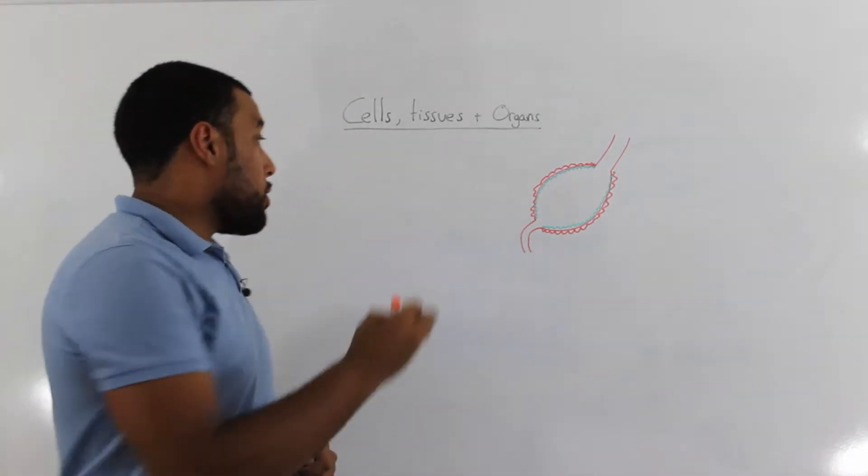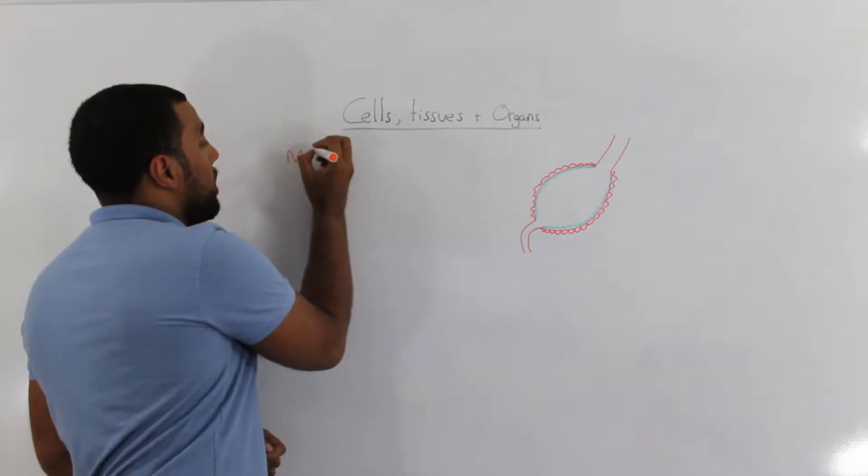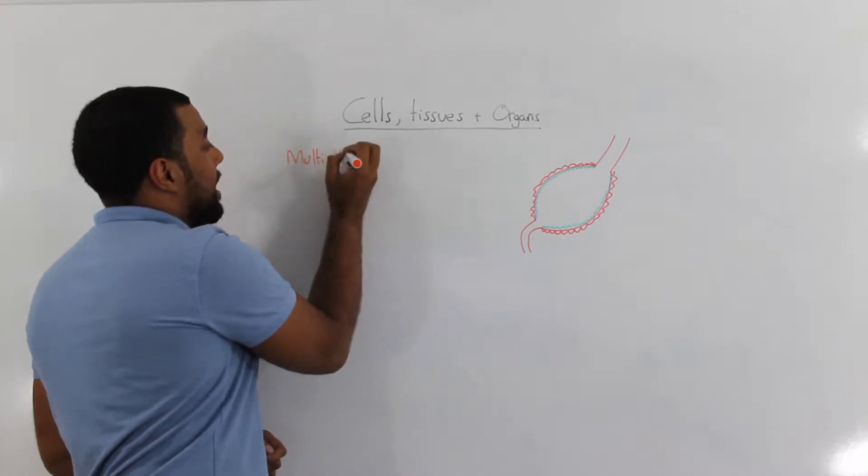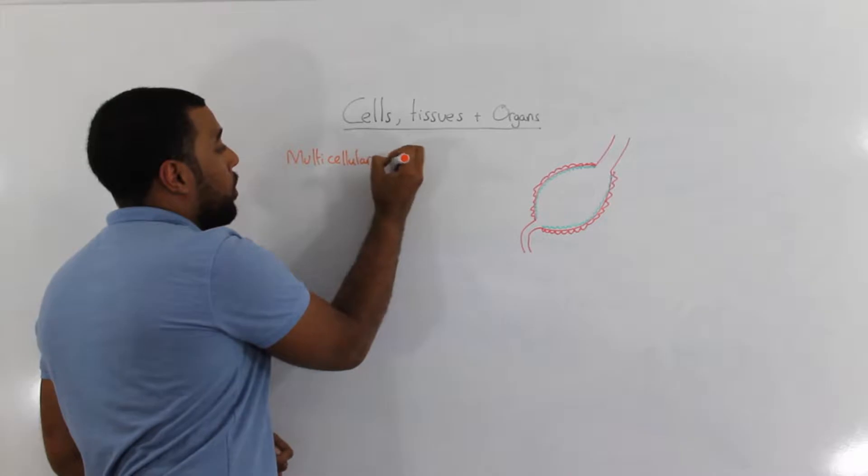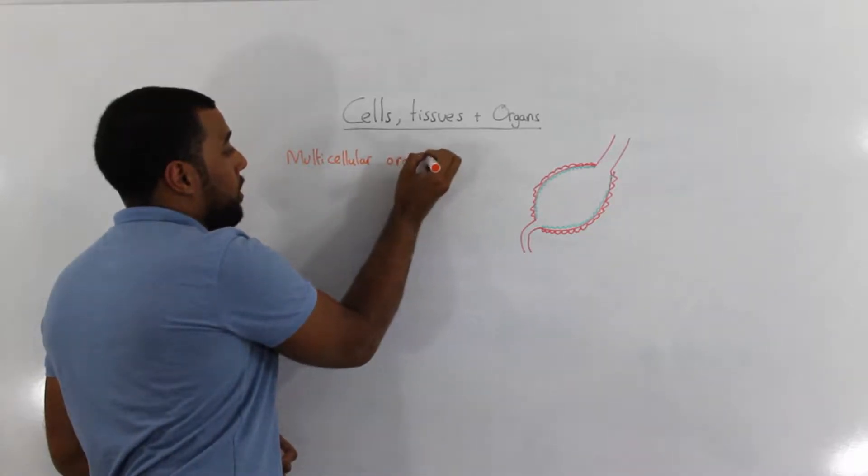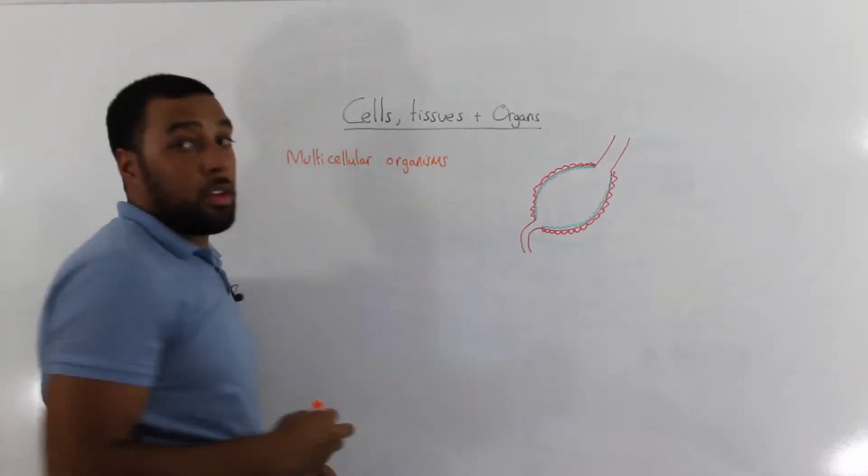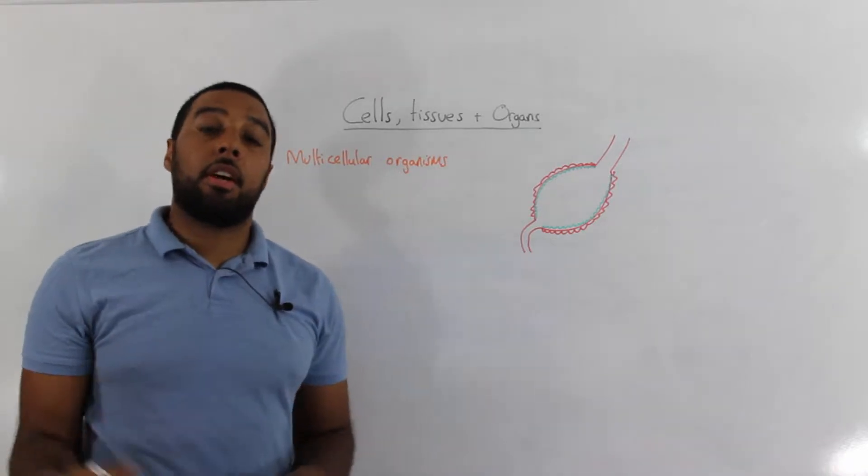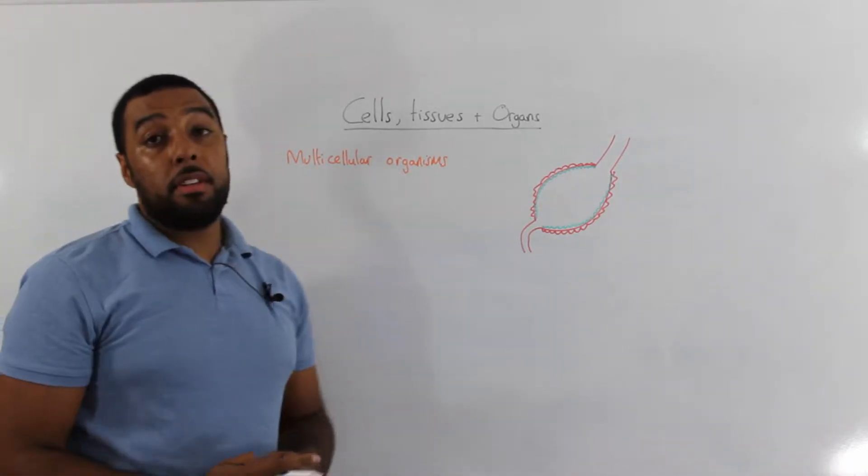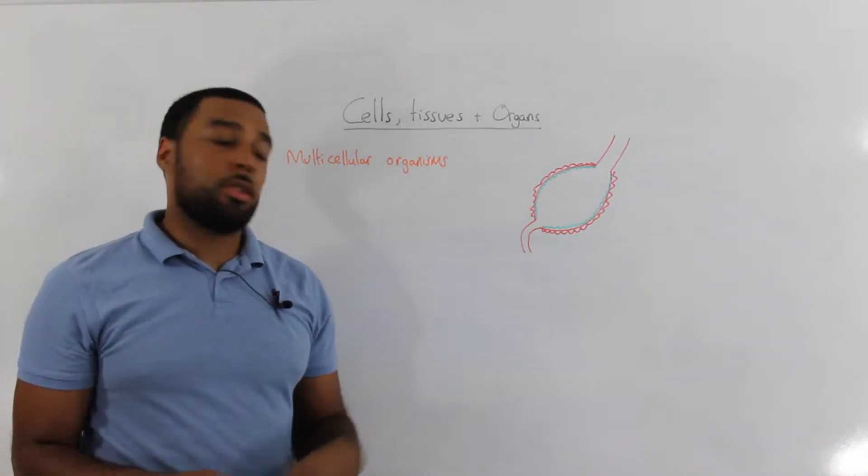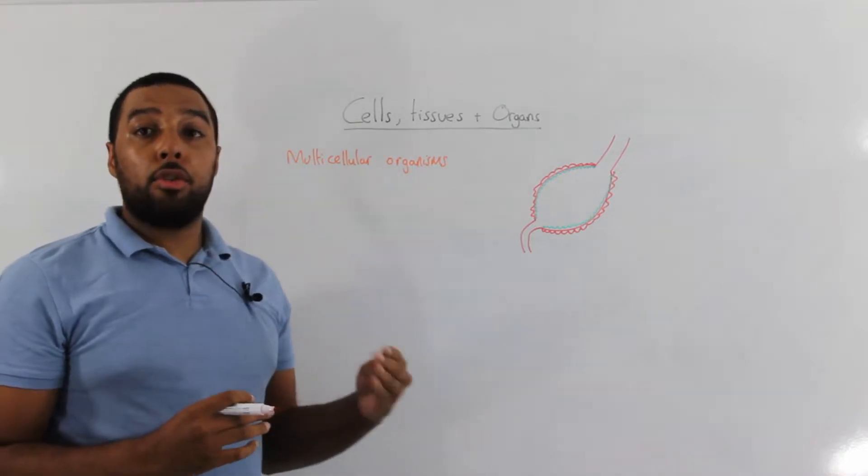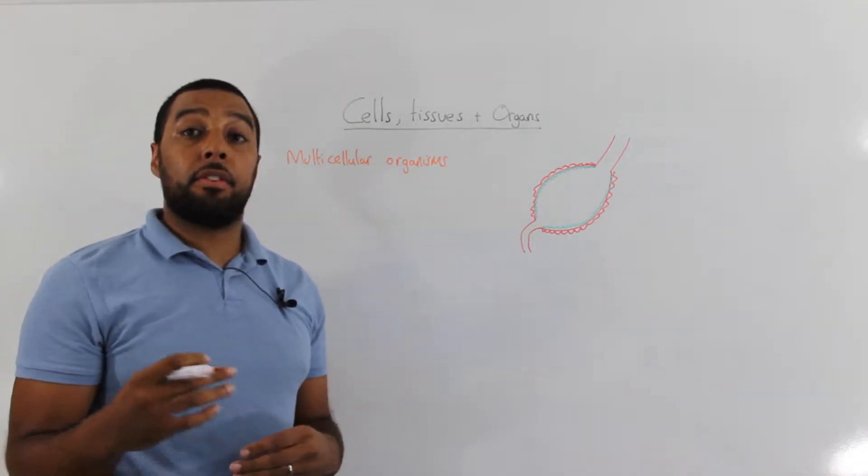Now there are something called multicellular organisms. Humans, plants and animals consist of these multicellular organisms and what this means is that chemical reactions take place in different cells.